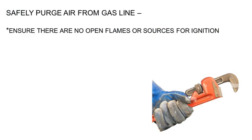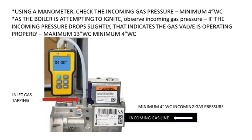Beyond looking at maintenance, follow the manual and check these items to uncover the cause of ignition failure. Is the gas line purged of air? Is there sufficient gas pressure? Using a manometer, check the incoming gas pressure — minimum 4-inch water column. As the boiler is attempting to ignite, observe incoming gas pressure. If the incoming pressure drops slightly, that indicates the gas valve is operating properly.